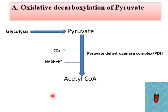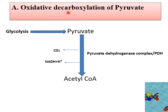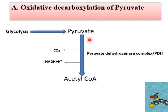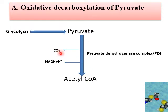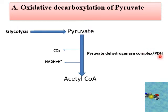The very first reaction that connects glycolysis with the Krebs cycle is the oxidative decarboxylation of pyruvate. Pyruvate undergoes oxidative decarboxylation and is converted into acetyl CoA. In this reaction, carbon dioxide leaves and NADH is formed. This reaction is catalyzed by the pyruvate dehydrogenase complex, also called the PDH complex.